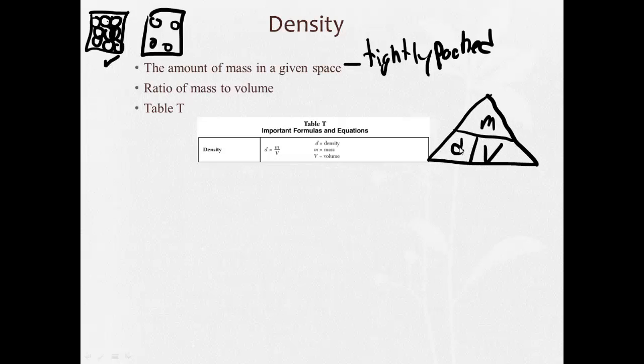So density, if I cover it up, is mass over volume. Let's say I have to calculate the mass when I'm given a density and a volume. I cover the mass, and mass is equal to density times volume. If I have to calculate the volume, given a mass and a density, I cover the volume, and volume is mass over density. But the basic formula, D equals M over V, is here in table T.